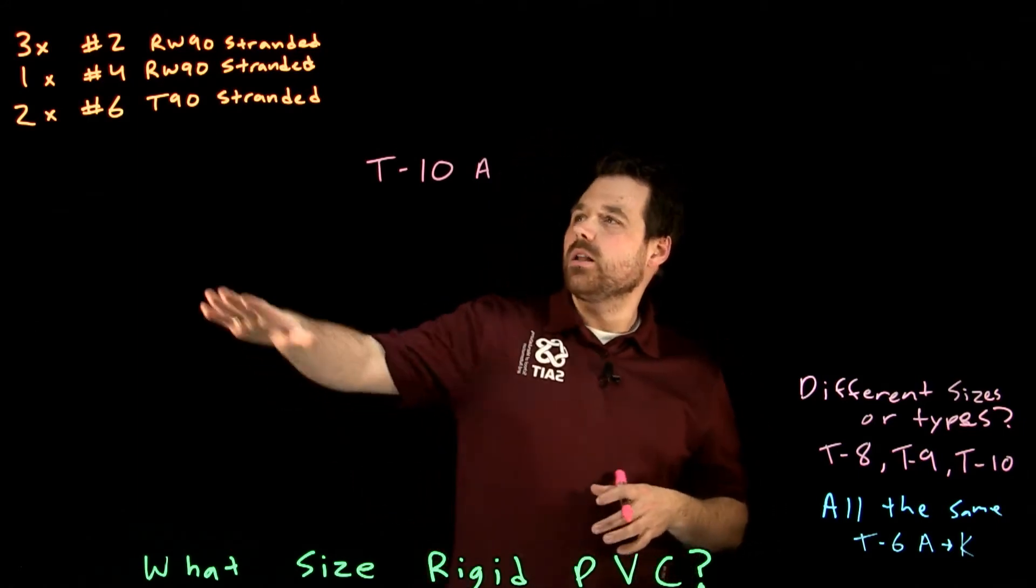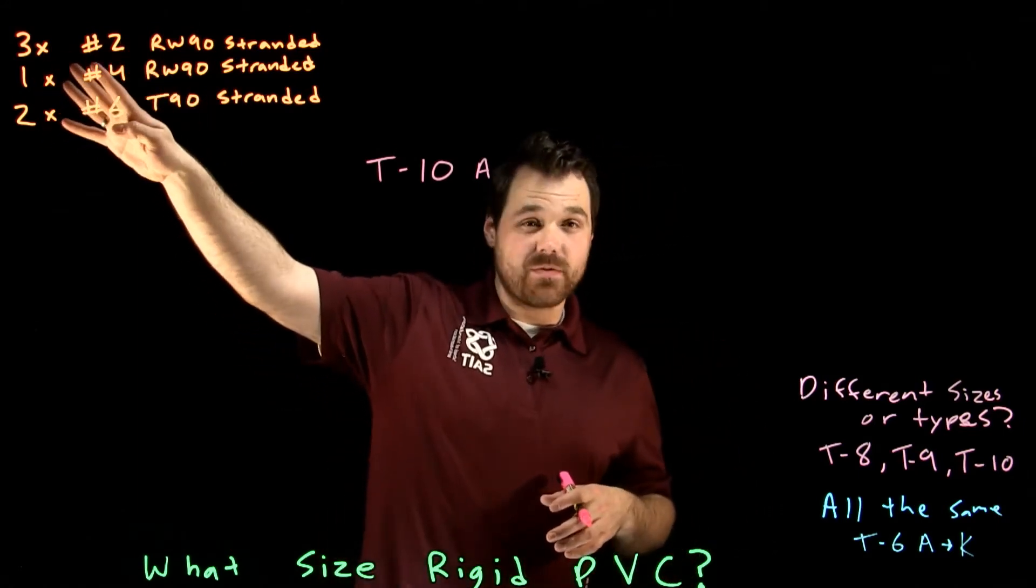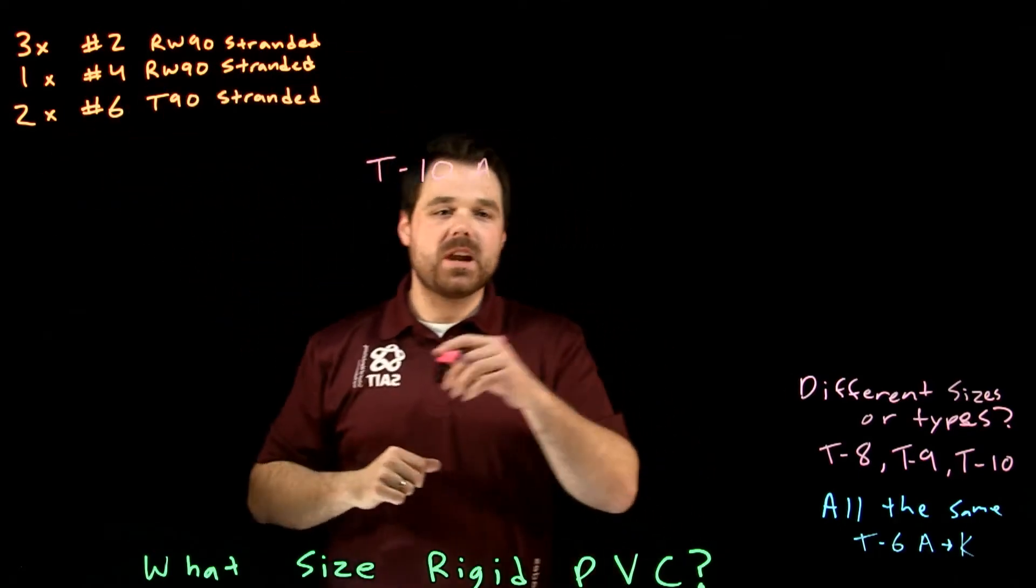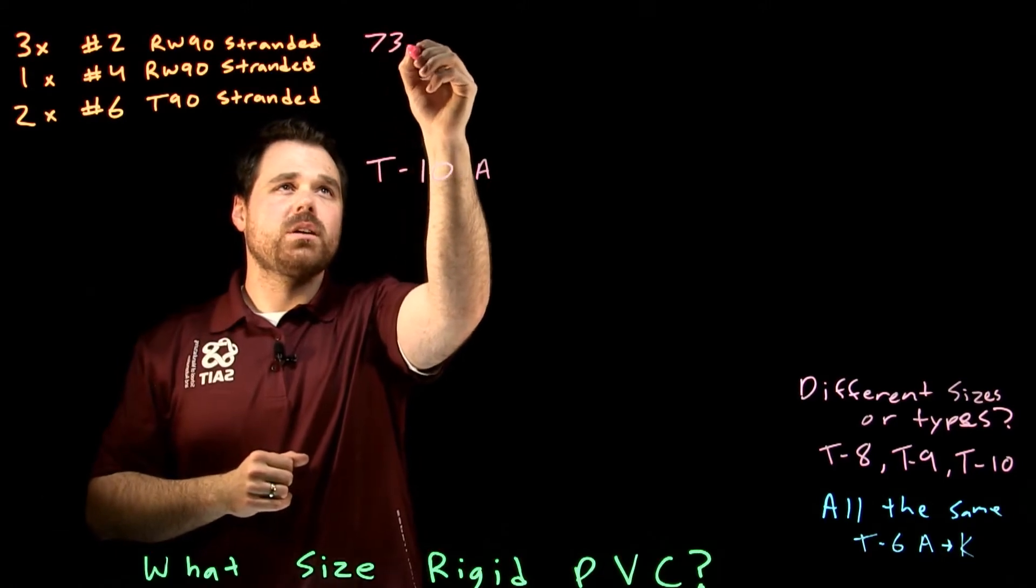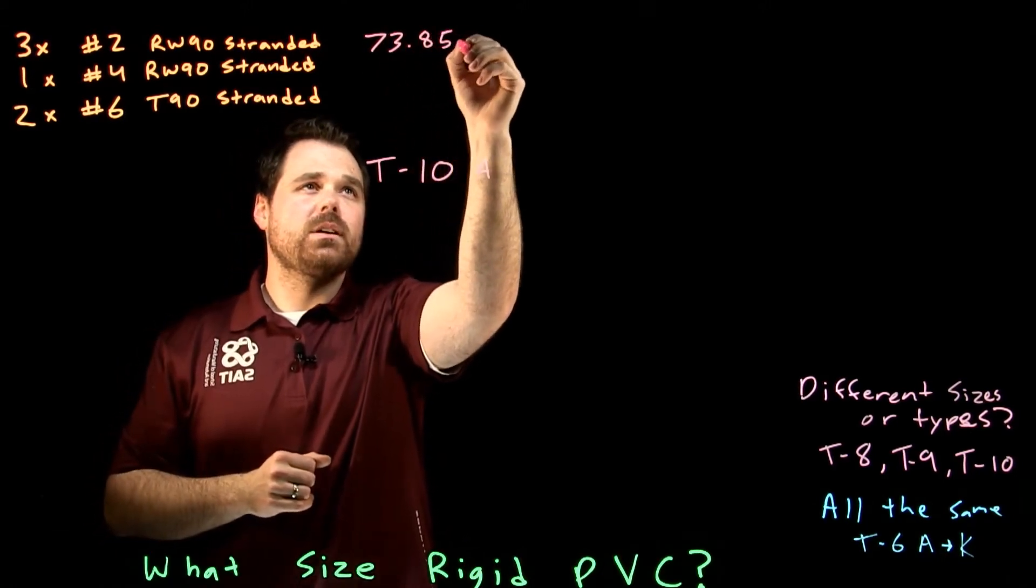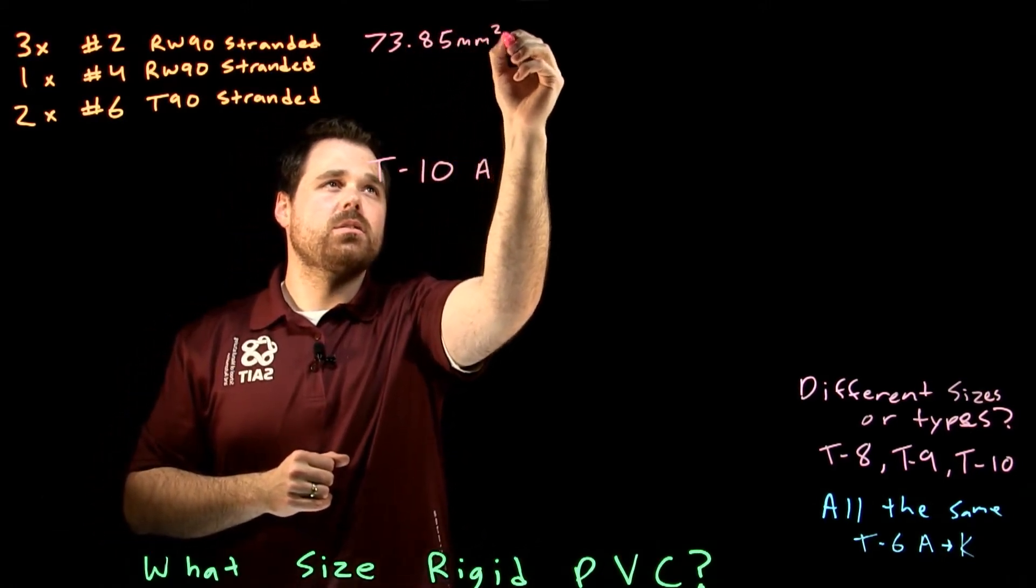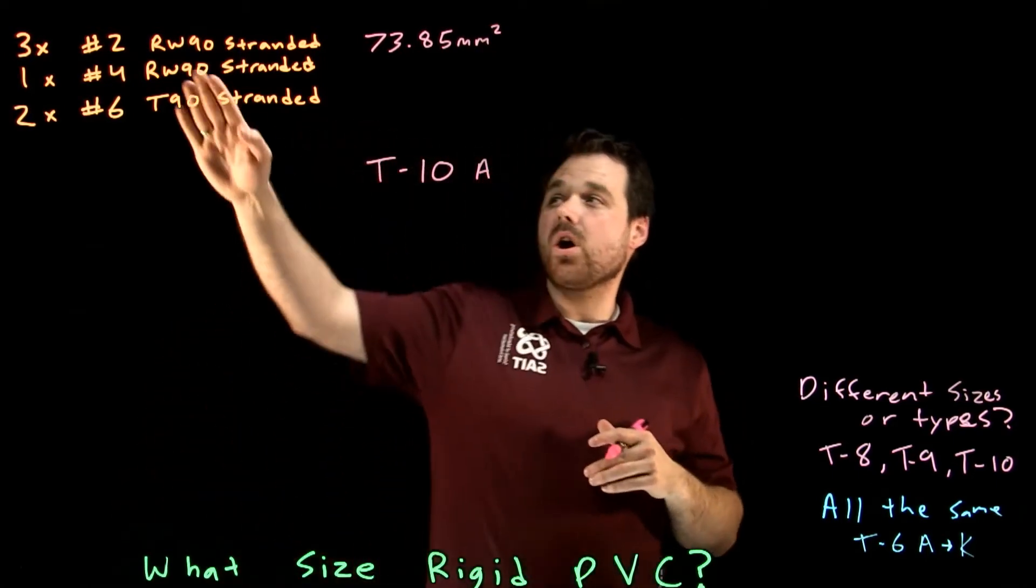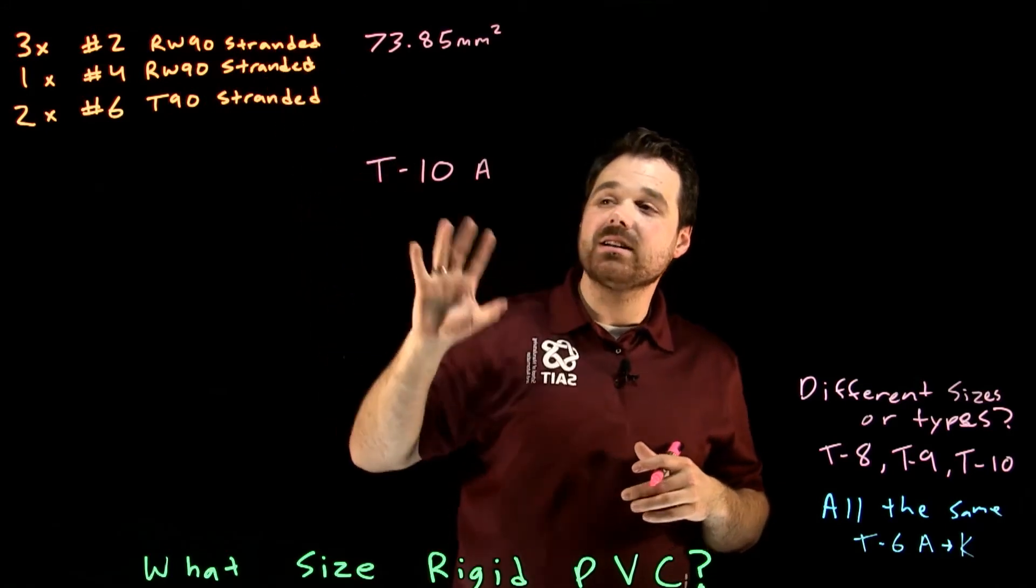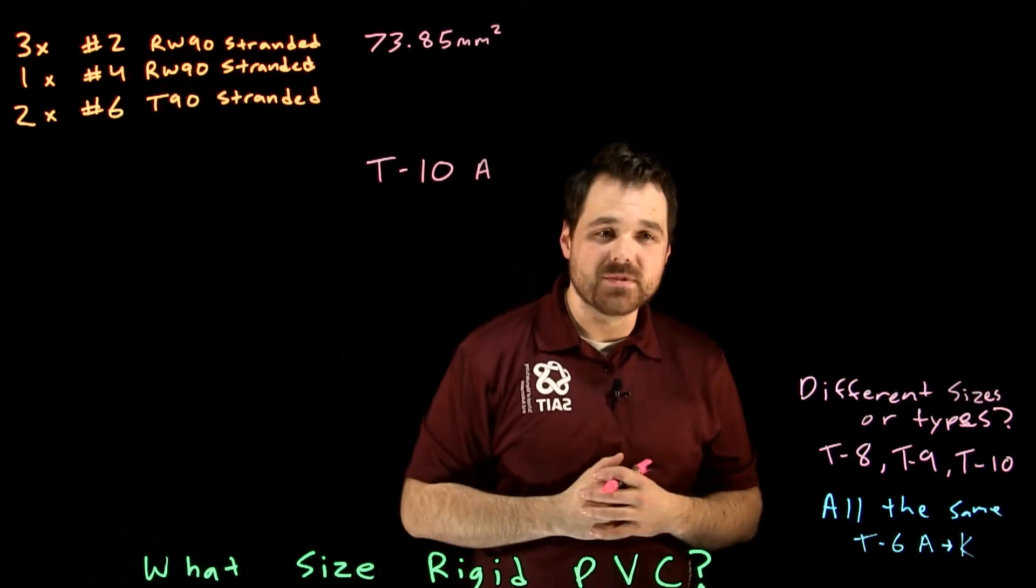Table ten A is going to tell us the area or the millimeter squared for each conductor. So this is the way I like to lay it out. I like to take my number twos, yes we have three of them, but I like to go to table ten and I like to say each number two is actually good for seventy three point eight five millimeters squared. I like to get that number. That is the circular area of one RW90 stranded number two conductor from table ten A.